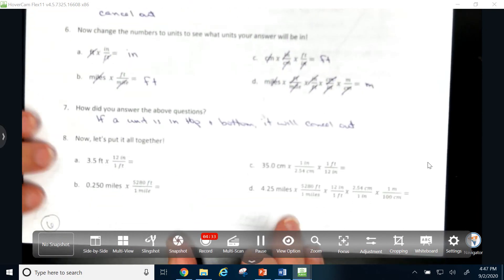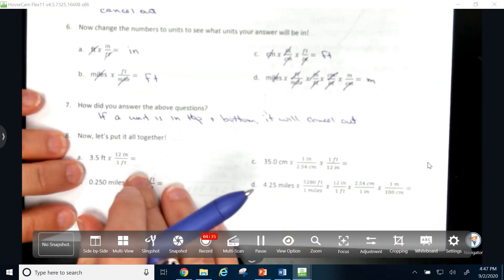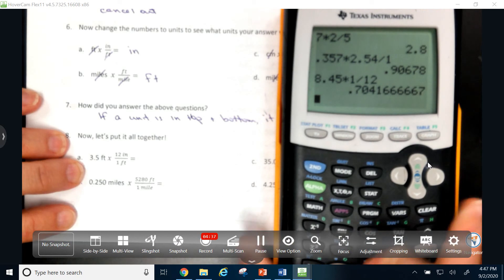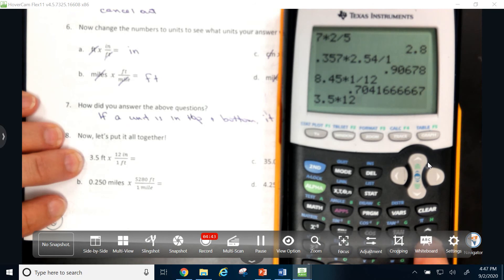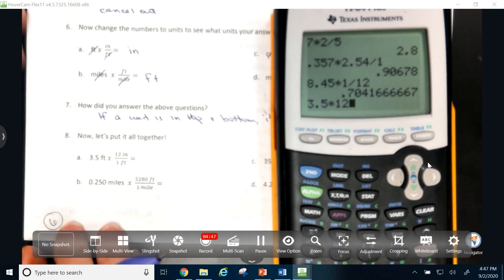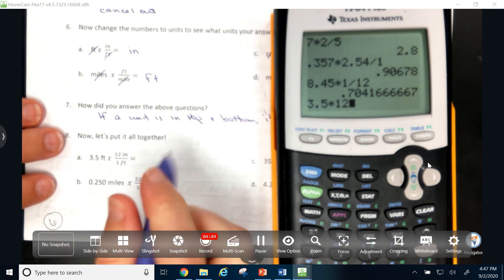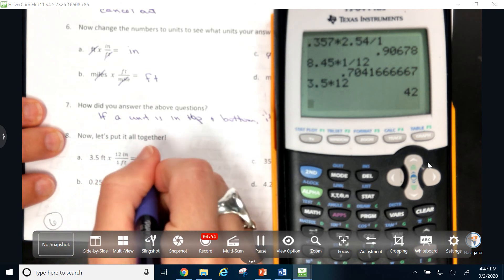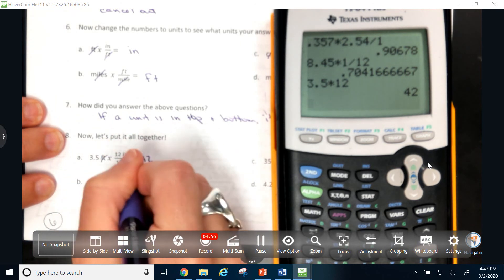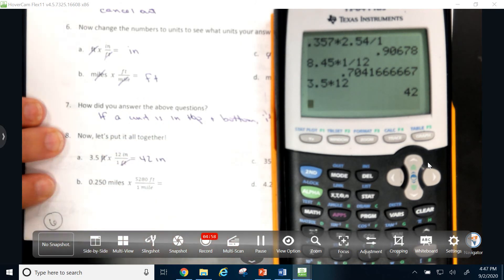So then, when I look at number 8, I'm going to put it all together. So I know, from before, I'm going to multiply by the top, I'm going to divide by the bottom. So 3.5 times 12. Well, you can put the divided by 1, or you don't have to, since we know that the divided by 1 is not going to change our answer. So I'm going to put 42. And my answer would be in inches, because those feet cancel out.